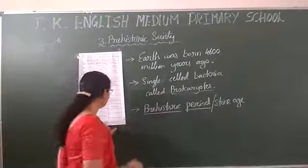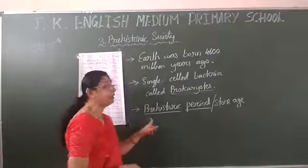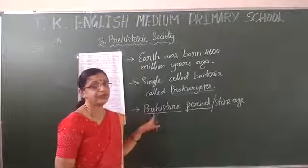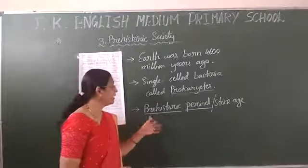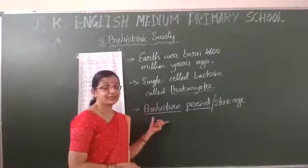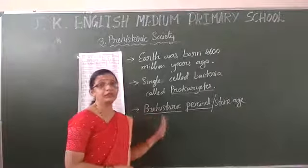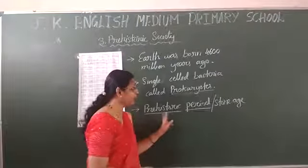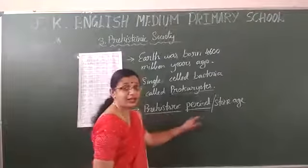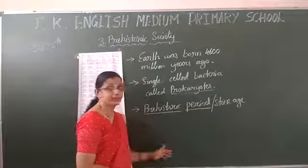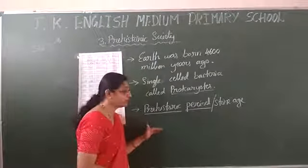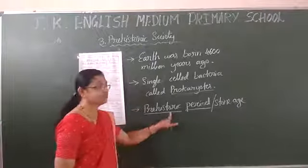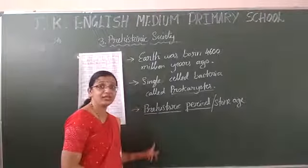When man evolved, he lived in the jungle only, not knowing about civilization, living as an animal. That is called the prehistoric period. It is again divided into three parts — how man's development grew — and that will be covered in the next class.